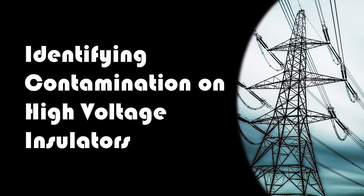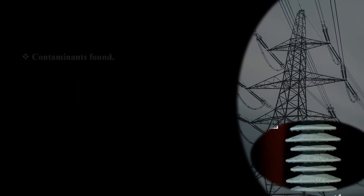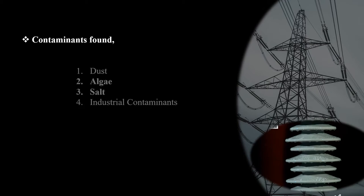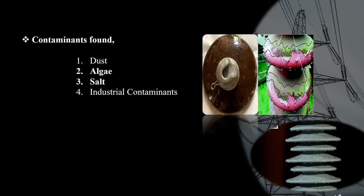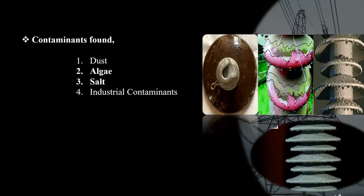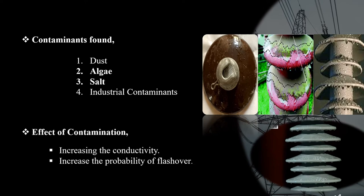Let us now focus on identifying contamination on high voltage insulators. Common contaminants found on high voltage insulators are dust, algae, salt and industrial contaminants. Here we focus on identifying algae and salt contamination. These contaminants result in an increase in the conductivity causing flash over.